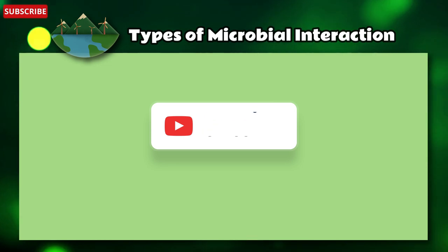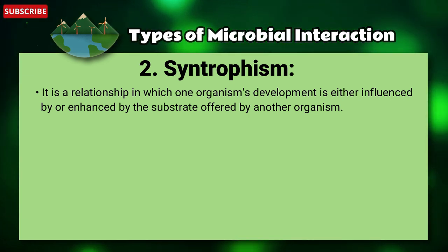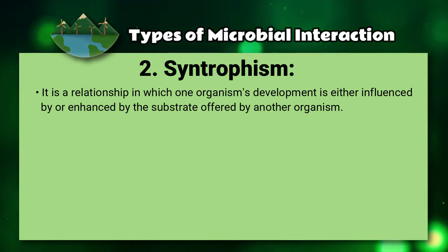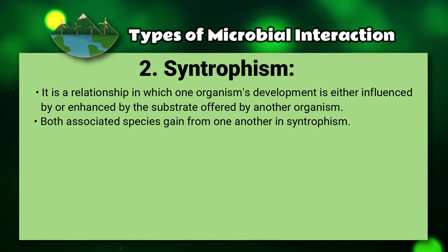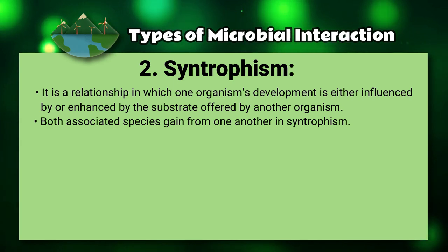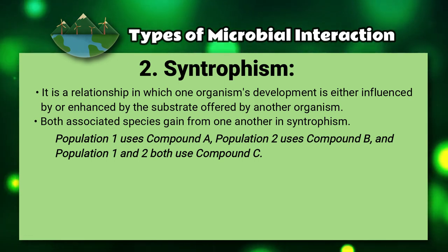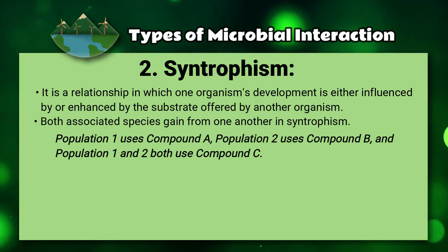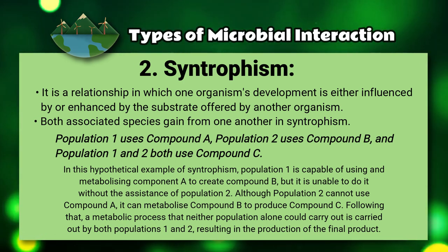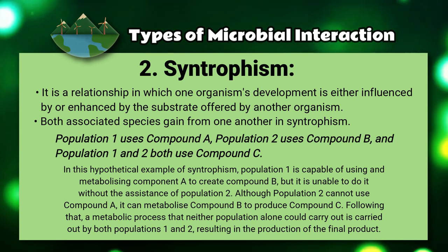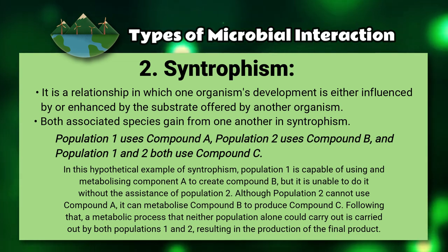Number two: syntrophism. It is a relationship in which one organism's development is either influenced by or enhanced by the substrate offered by another organism. Both associated species gain from one another in syntrophism. For example, population one uses compound A, population two uses compound B, and both populations use compound C. Population one is capable of using and metabolizing compound A to create compound B, but it is unable to do it without the assistance of population two.